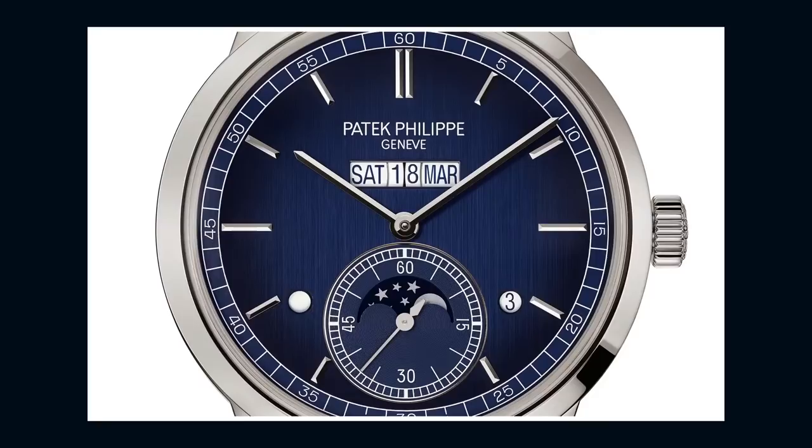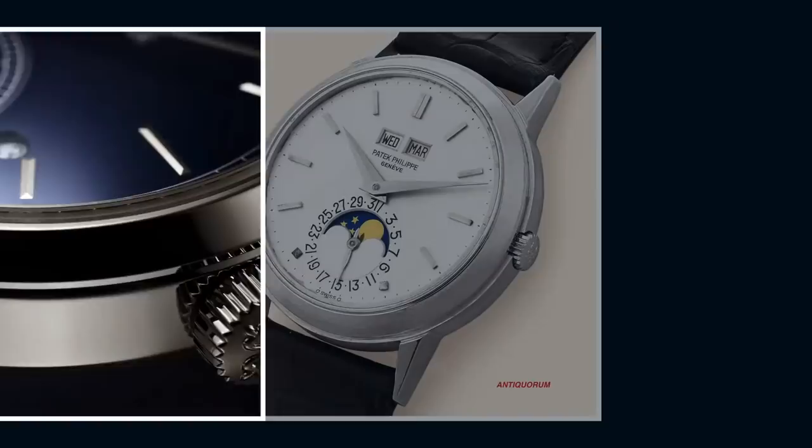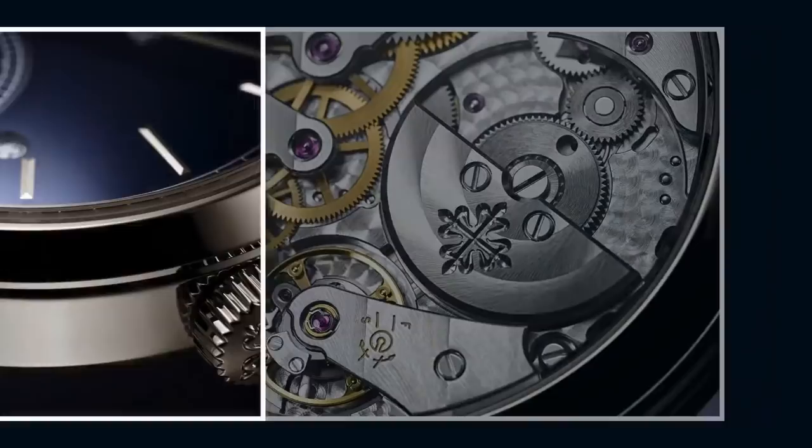It's a 41.3 millimeter platinum perpetual calendar, a dress watch, with an inline display. While this is not the only inline display for a calendar system, this is still a very big leap for Patek in terms of aesthetics and mechanics. It has a patented inline display that is all theirs, with discs that rotate. It has a dial of blue gradient fade, satin finish, with a vertical brushed steel-like pattern.